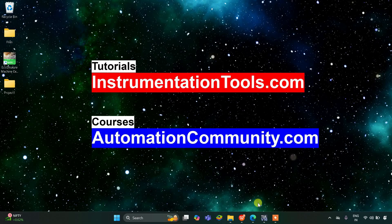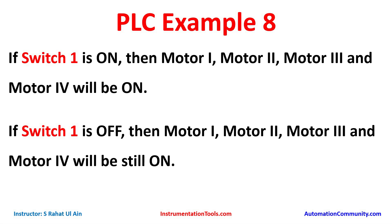Hello everyone, welcome to Automation Community. Today in this video we are going to discuss an example in which we will implement latching. If switch one is on, then motor one, motor two, motor three, and motor four will be on. If switch one is off, then motor one, motor two, motor three, and motor four will still be on. For switch one we will use a normally open contact, and to keep the motors on when switch one is off, we will implement latching using a memory bit.